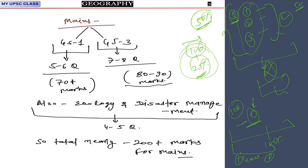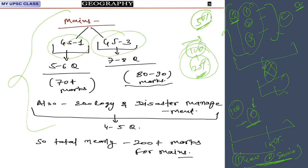So the sequence is: first read geography, then environment. For mains examination, the geography syllabus is divided across papers. In mains you need to write essays, GS1, GS2, GS3, GS4, and two optional papers. The geography syllabus is split between GS paper 1 and approximately 25 percent is also covered in GS paper 3.